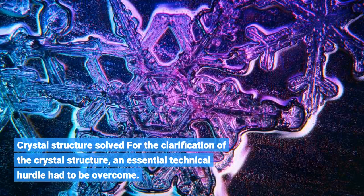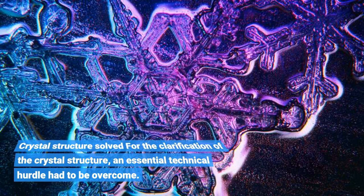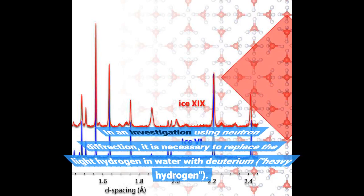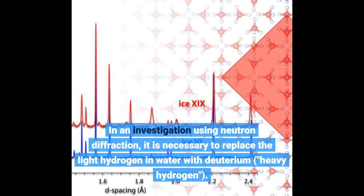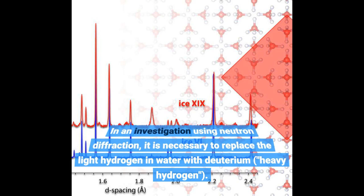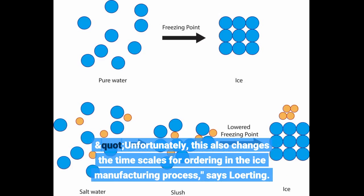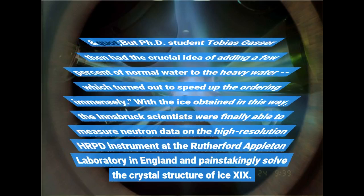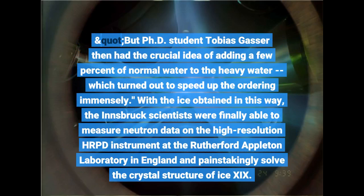For the clarification of the crystal structure, an essential technical hurdle had to be overcome. In an investigation using neutron diffraction, it is necessary to replace the light hydrogen in water with deuterium, heavy hydrogen. Unfortunately, this also changes the time scales for ordering in the ice manufacturing process, says Lording. But PhD student Tobias Gasser then had the crucial idea of adding a few percent of normal water to the heavy water.